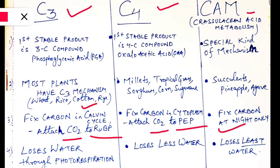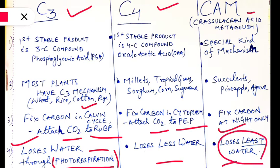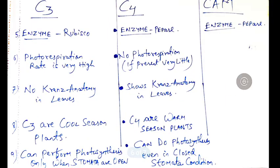Photorespiration is a process where respiration — taking in oxygen and exhaling carbon dioxide — occurs in the presence of light during daytime. Water loss through photorespiration is highest in C3 plants. Less water is lost in C4 plants, and least water is lost in CAM — Crassulacean Acid Metabolism — plants.